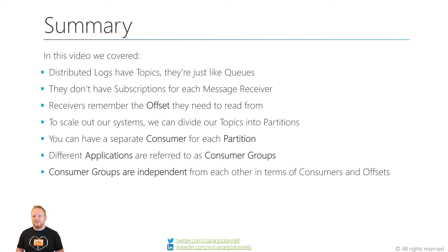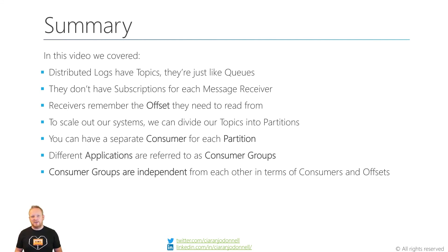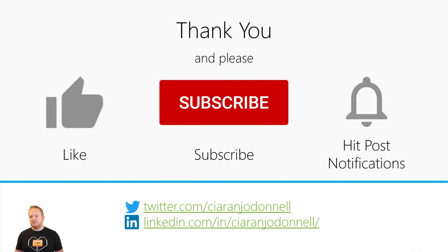That's it for a brief introduction to distributed log brokers. In this video we covered the fact that distributed logs have topics that work just like queues — they don't really have subscriptions for each message receiver. It's up to the receivers to remember the offset they need to read from, although in truth the client libraries will normally help with this. To scale out our systems we divide our topics into multiple partitions and can have a separate consumer for each partition. Different applications that receive from our topic are referred to as consumer groups, and different consumer groups are independent from each other in terms of consumers and offsets — they are the closest representation to a subscription in this type of broker. Thanks for watching — please give me a like, hit subscribe if you want to see more, and I'll see you next time!